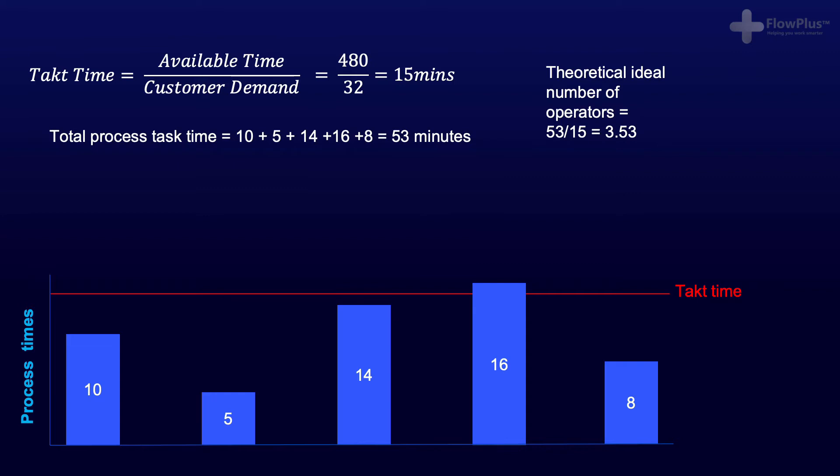First and foremost, you don't want to overburden workers, and as we have learnt in the Kingman equation, when we have utilization close to 100%, any process variation can cause exponential delays.